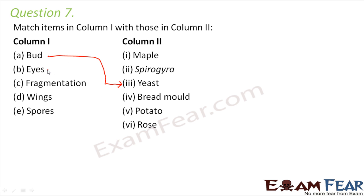Eyes — where do we see eyes? Eyes are seen on potato, and these eyes are nothing but buds which are capable of giving rise to the shoot system under favourable conditions. Fragmentation occurs in Spirogyra, where the body breaks into pieces and each piece is capable of giving rise to a new organism.